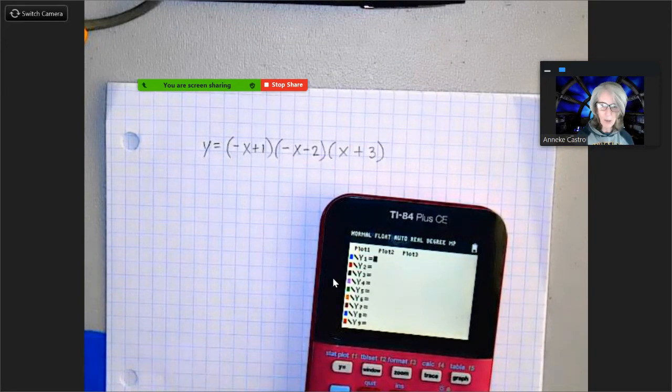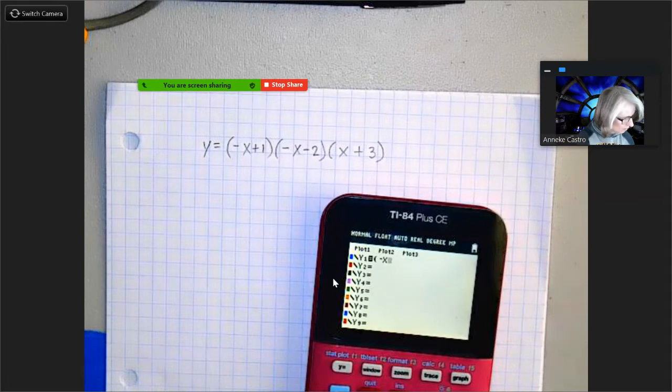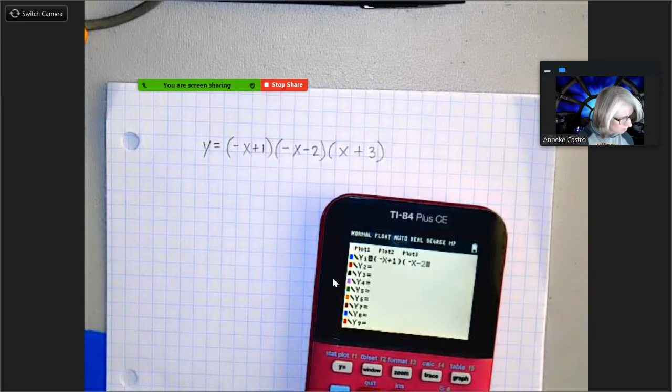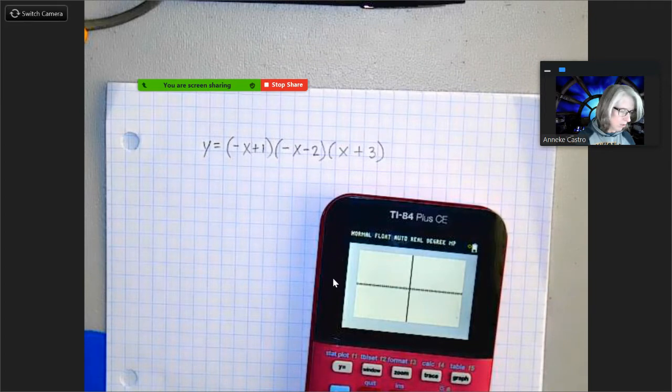We're going to go y equals and we're going to enter this in as if we were going to graph it. I have my parentheses negative x plus one, close my parentheses, open parentheses negative x minus two, close my parentheses, open my parentheses x plus three. There it is. You could graph it, have a look at it, make sure that you entered everything in right, you don't get an error. Okay, so there it is, beautiful.